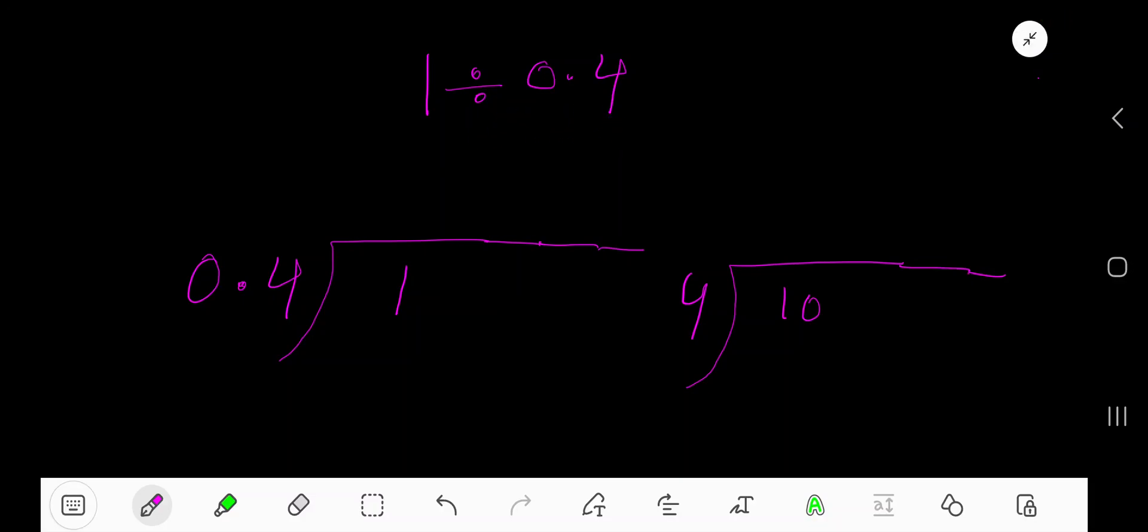1 divided by 0.4. Now convert: 0.4 is the divisor, 1 is the dividend. Convert this dividend to a decimal number because our divisor is a decimal number. Just take a decimal, then number of zeros. Since the divisor has one digit after the decimal, we have taken just one zero after the decimal.